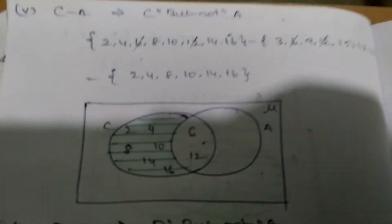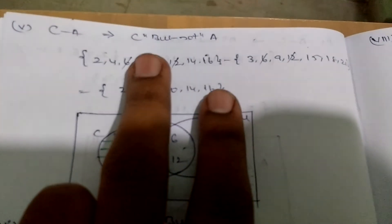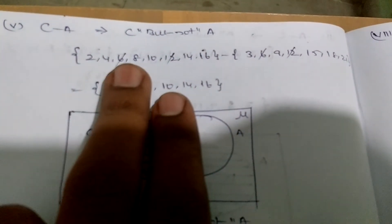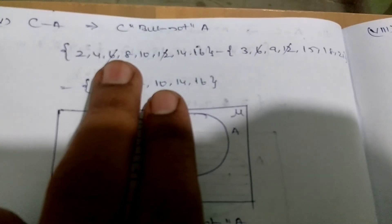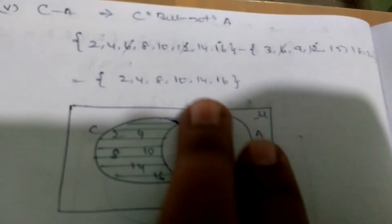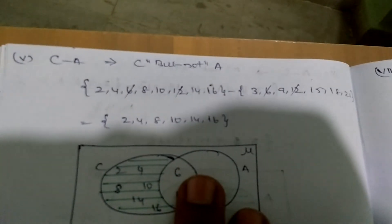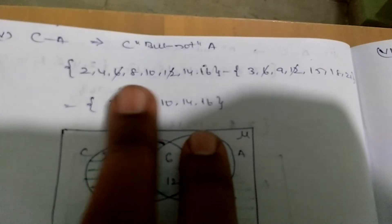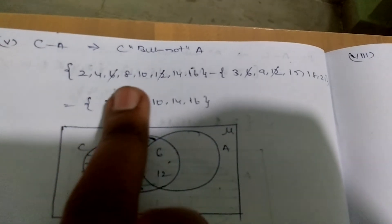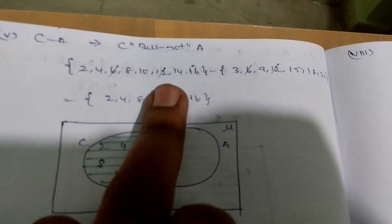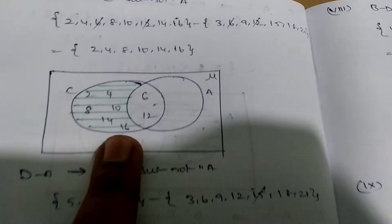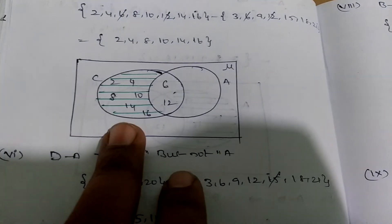Coming to C minus A — C but not A — nothing but multiples of 2 and multiples of 3. In multiples of 2 and 3, the repeated values are 6 and 12. So strike those elements and mention the remaining elements in set C. Go through the Venn diagram accordingly.